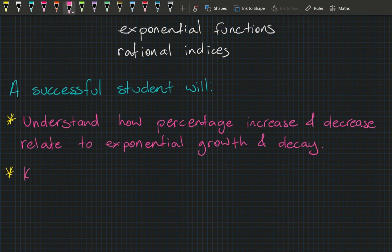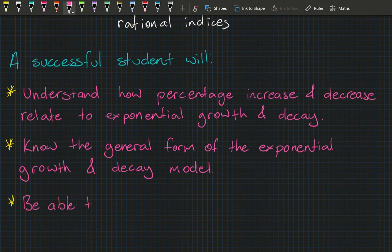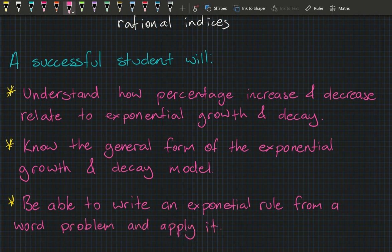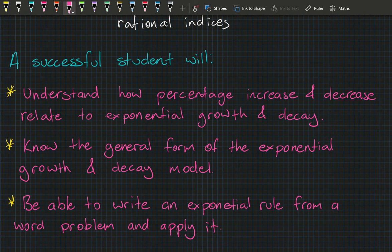In this lesson, a successful student will: understand how percentage increase and decrease relate to exponential growth and decay; know the general form of the exponential growth and decay model; and be able to write an exponential rule from a word problem and apply it. These exponential models really do describe population growth — not just humans — as well as financial and business growth and other aspects of life on Earth. Put in a big effort, and I'll see you in the next class.